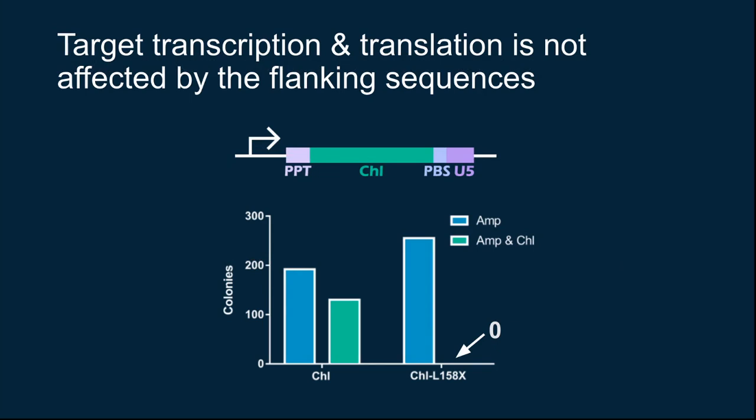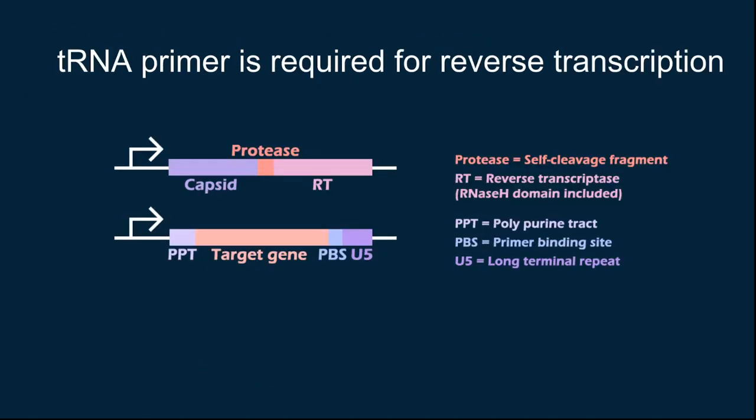The L158X mutant is one of the seven nonsense mutants designed on the CHL gene. The mutation would truncate the protein and result in its loss of function. And we can see that cells carrying this plasmid cannot grow in plate containing the CHL antibiotic. Then, a tRNA primer is needed for the initiation of minus-strand synthesis. This primer also enables the specificity of our reverse transcription, as it only recognizes the target sequence which carries the primer binding site. This allowed our system to only mutate the target sequence, but not any other.